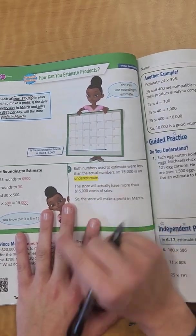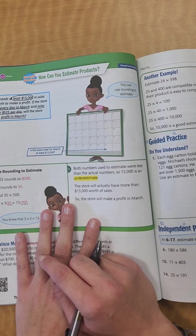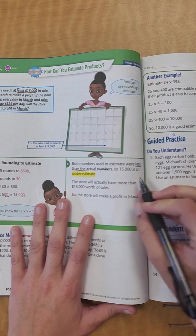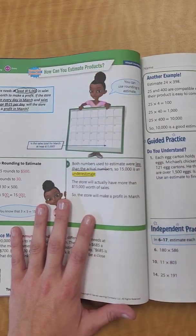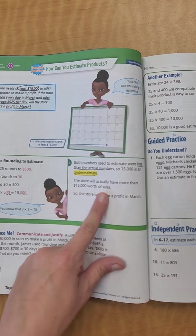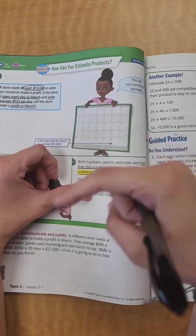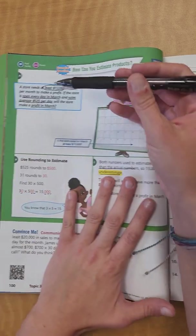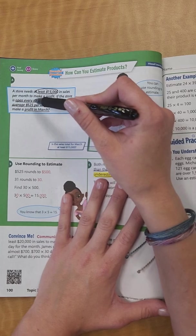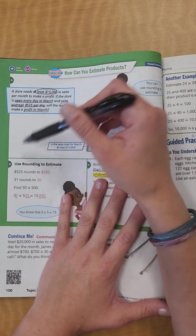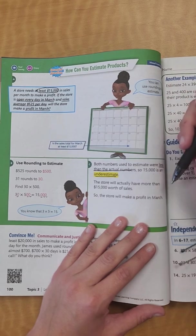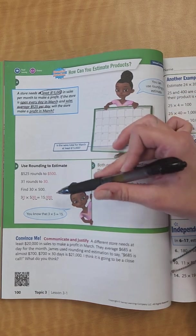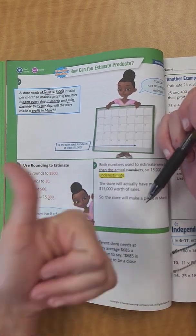Both of the numbers that we used to estimate were less than the actual numbers. So $15,000 is an underestimate. The store will actually have more than $15,000 in sale, because we rounded down when we talked about the number of months, that we did 30 instead of 31, and we rounded down when we talked about the amount of money, instead of $525, we rounded down to $500. So we know that they're going to make a sale or a profit, because we rounded down in both of them, and we still got $15,000. Hopefully that makes sense.